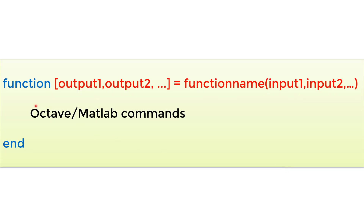MATLAB/Octave requires a certain syntax to write a function. The very first line must start with the keyword 'function', followed by a square bracket containing the output variable. If you have multiple outputs, you can list output1, output2, output3, and so on, separated by commas. If you have only one output, you can skip the square bracket. Then use an equal sign, followed by your chosen function name, followed by parentheses containing your input parameters. If you have multiple inputs, list input1, input2, input3, separated by commas. At the very last line, use 'end' to finish the function, and in between you can write any sequence of Octave/MATLAB commands, making sure to build a relationship between the output and input variables.